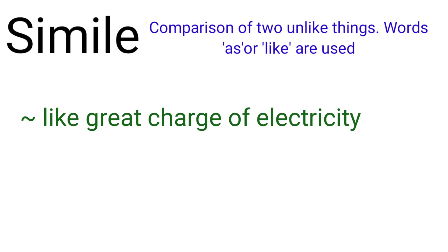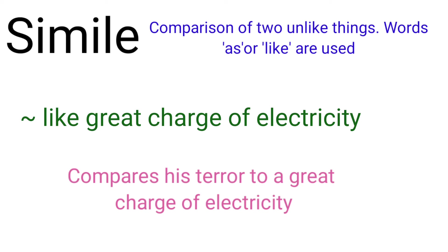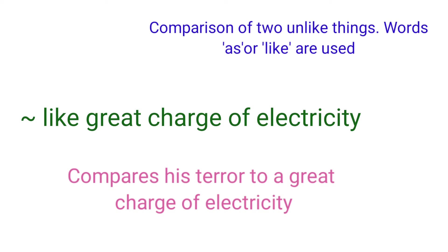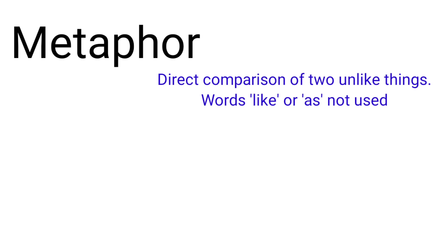The third simile is: 'like a great charge of electricity.' Here he has compared his terror to a great charge of electricity. You might have noticed the words 'as' or 'like' used in these examples. Next is metaphor. Metaphor is a direct comparison between two unlike things; the words 'as' or 'like' are not used.